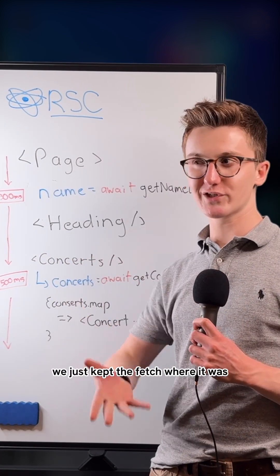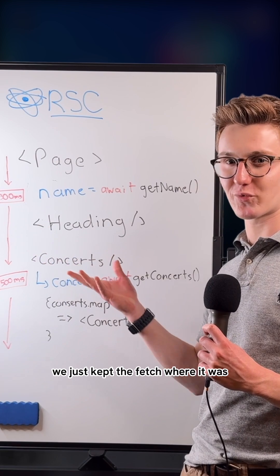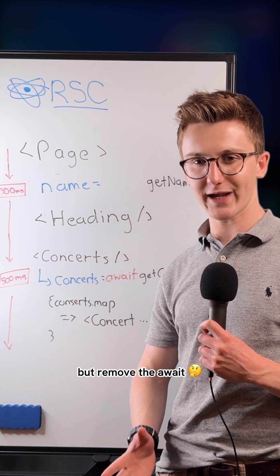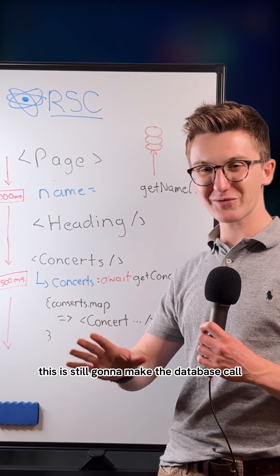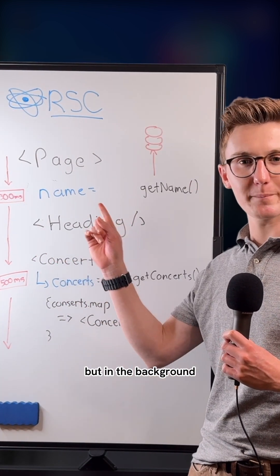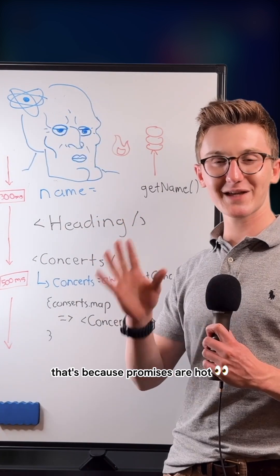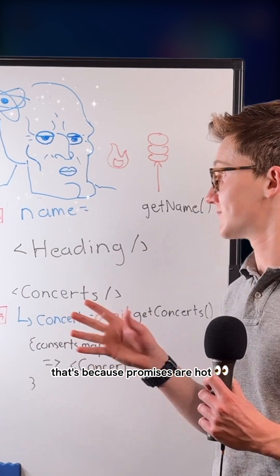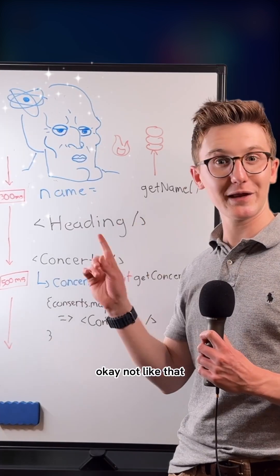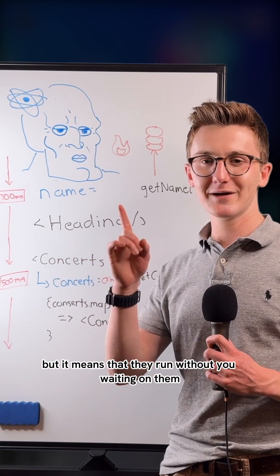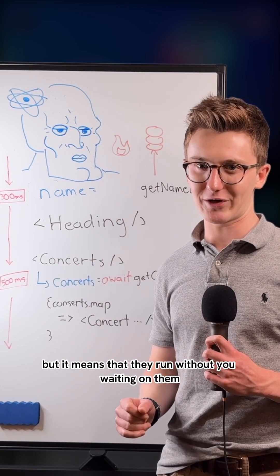So what if we just kept the fetch where it was, but removed the await? This is still going to make the database call, but in the background. That's because promises are hot — it means that they run without you waiting on them.